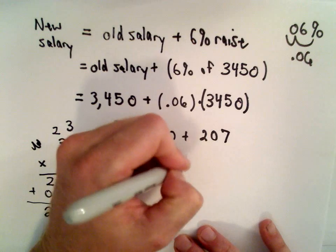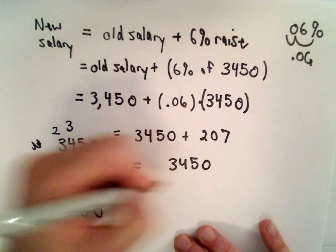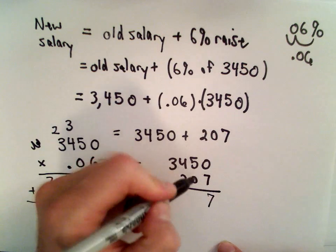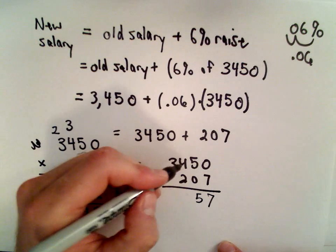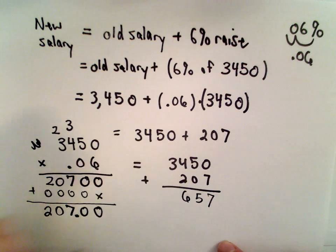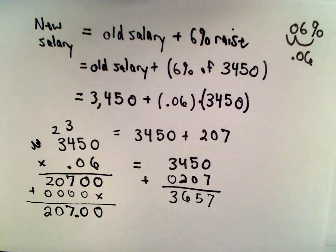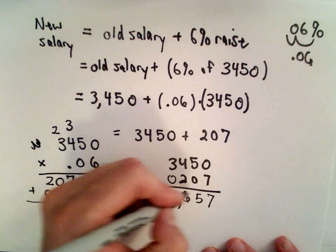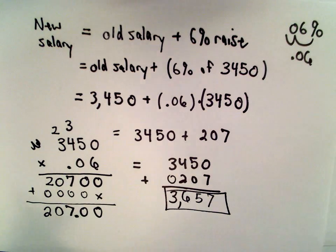If I add those: 0 plus 7 is 7, 5 plus 0 is 5, 4 plus 2 is 6, 3 plus 0 is 3. So her new salary is going to be $3,657. I got it right there.